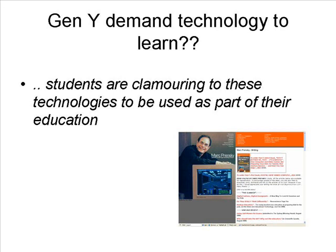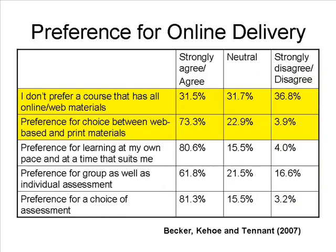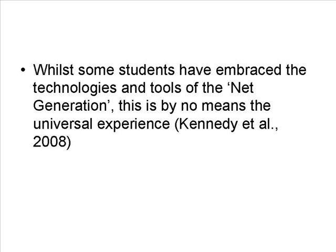In the USA, a survey of 4,373 college students, of whom 95% had been born in 1989 or after, concluded that: 'We expected to find that the next generation students would demand greater use of technology in teaching and learning. What we found was a moderate preference for technology.' A more recent survey of 850 undergraduates in three introductory level core courses in Australia found that 73.3% of respondents prefer to have a choice between web-based and print materials, and that only 36.8% preferred a course that only had online or web materials.